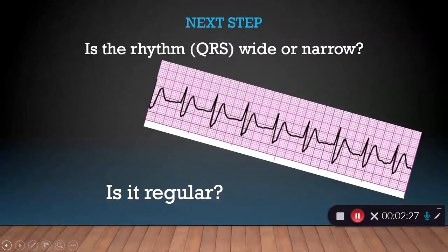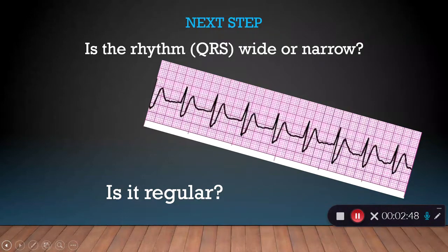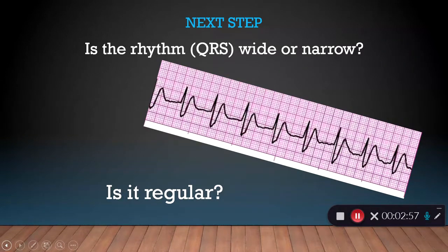Now, back to that five-step approach as we're analyzing this rhythm. This isn't rocket science — it's simple EKG interpretation. We're going to look at: is the rhythm wide or narrow? If it's narrow, we go to the other video. If it's wide, we're going to talk about that here. Remember, wide is a QRS that's wider than 0.12 seconds. The other thing we want to look at is: is it regular?